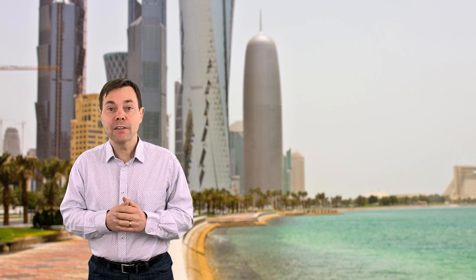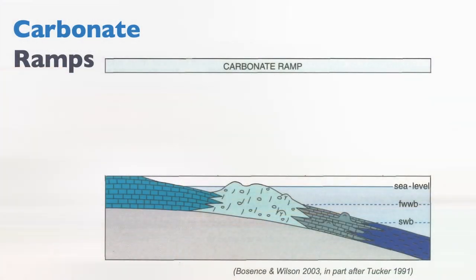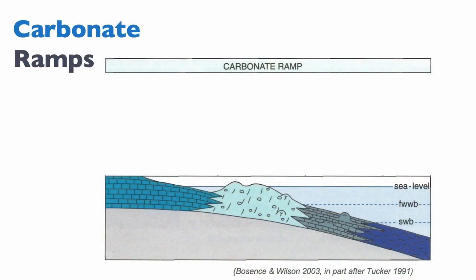Let's look at the facies model for carbonate ramps. On this diagram, you can see that on carbonate ramps we do not have a well-developed reef. This does not mean that we don't have reefs — you will see that in the Persian Gulf we have reefs, but the reefs do not form a barrier.